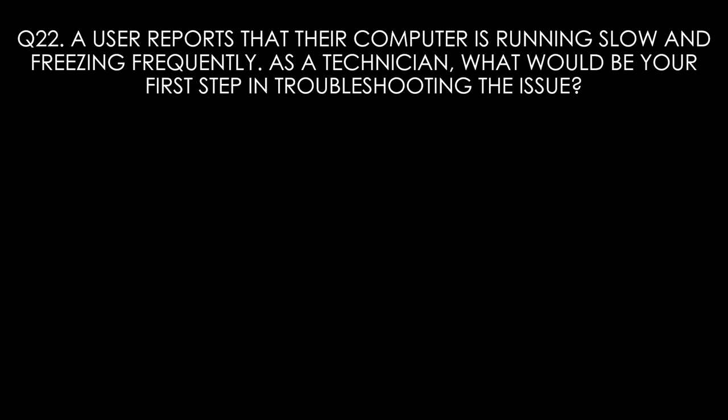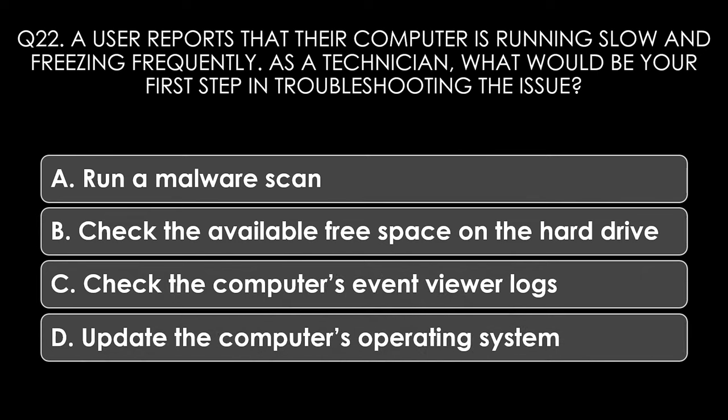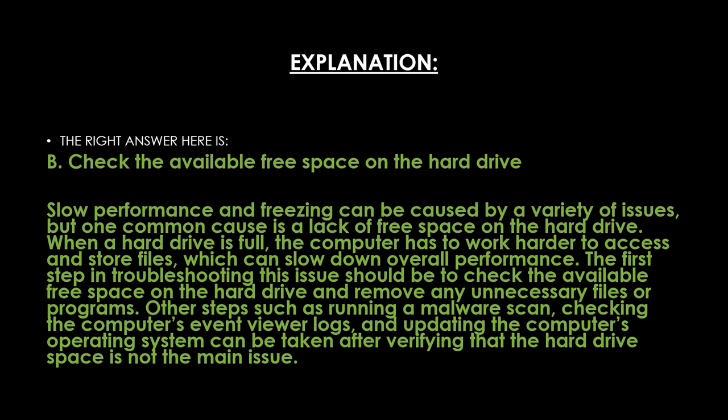Question twenty-two. A user reports that their computer is running slow and freezing frequently. What would be your first step in troubleshooting? Options: A: run a malware scan, B: check the available free space on the hard drive, C: check the event viewer logs, D: update the operating system. The right answer is B, check the available free space on the hard drive. A lack of free space is a common cause of slow performance — when a hard drive is full, the computer works harder to access and store files, slowing overall performance. The first step should be to check free space and remove unnecessary files or programs.